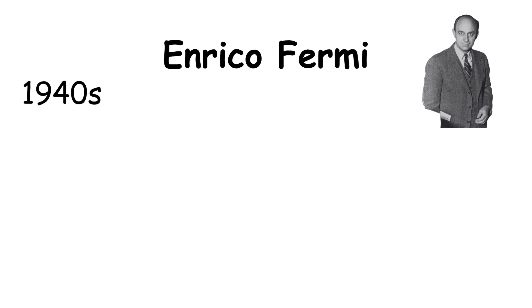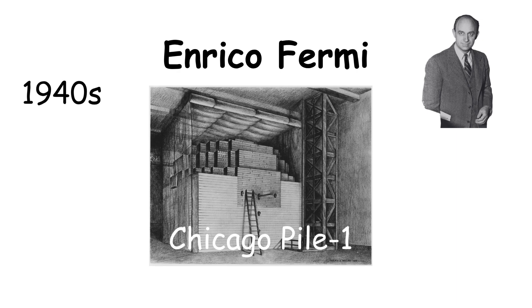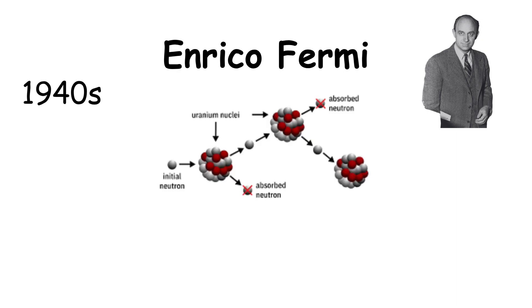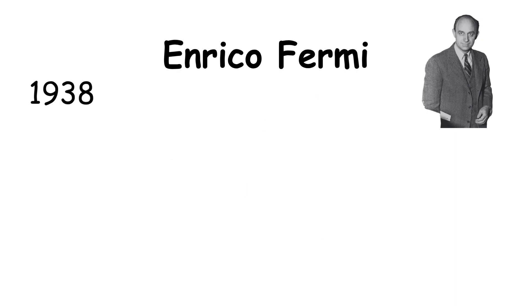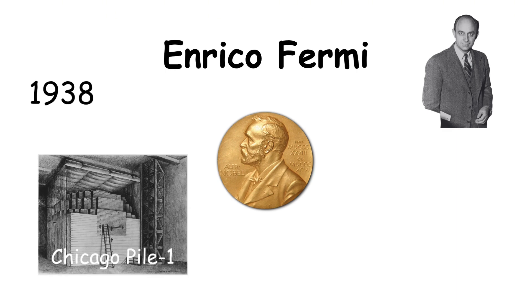In the 1940s, Fermi led the construction of the first nuclear reactor, proving that a controlled chain reaction was possible. He received the Nobel Prize in physics in 1938 for his work on artificial radioactivity and nuclear transformations.